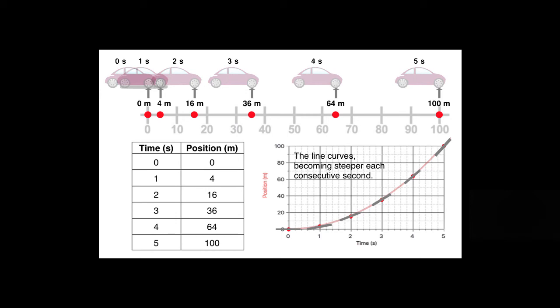The position time graph for an accelerating object is a curved line, and for speeding up motions, it's a curved line that gets steeper over the course of time.